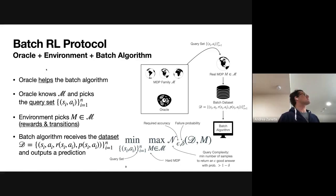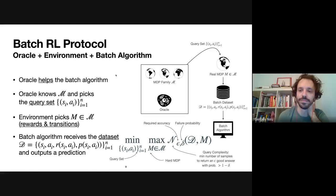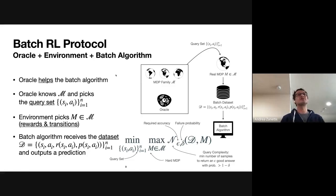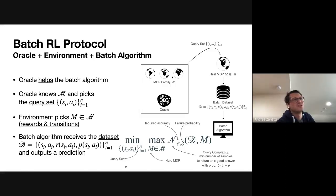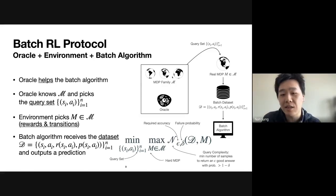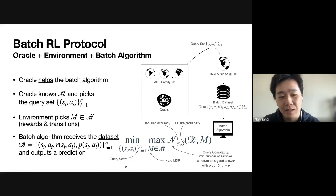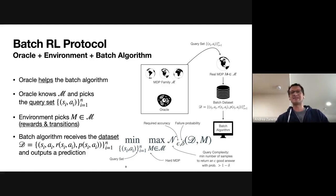There is a clarifying question about notation: the small n and the query set are the same thing as the calligraphic N later on. Another way to put it is that you could write min over distributions over state-action pairs, which would get rid of the redundancy. The definition is a bit imprecise as written.